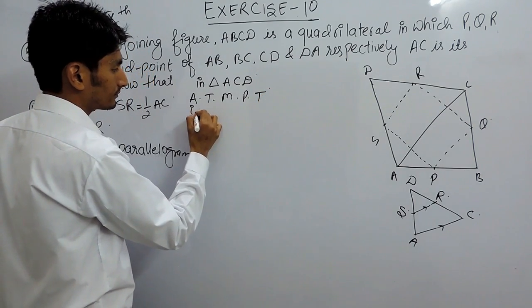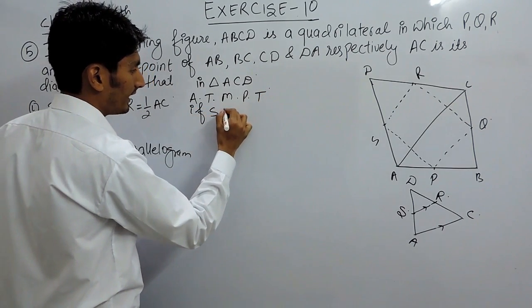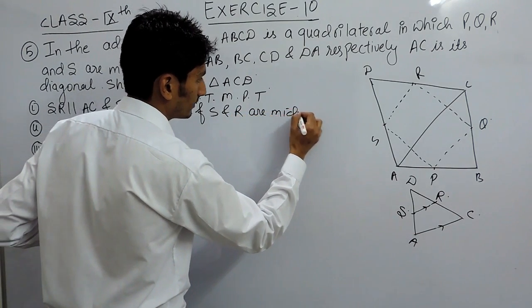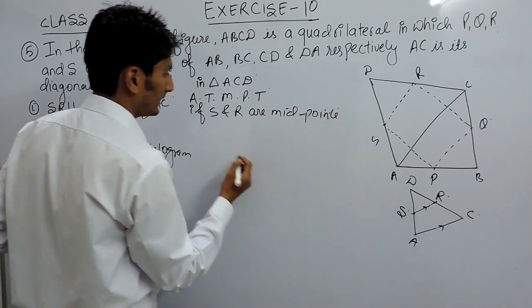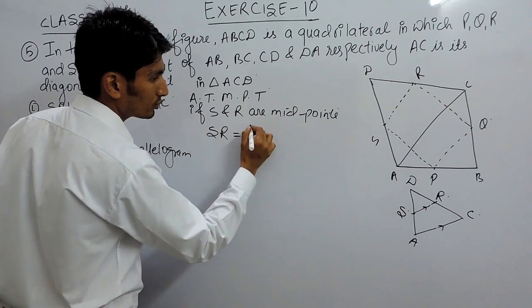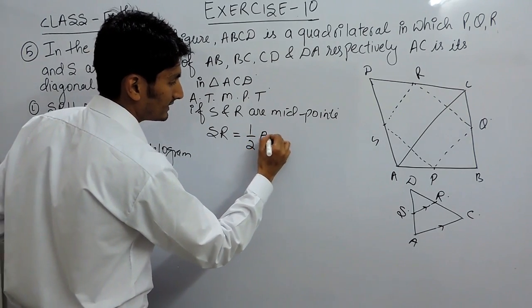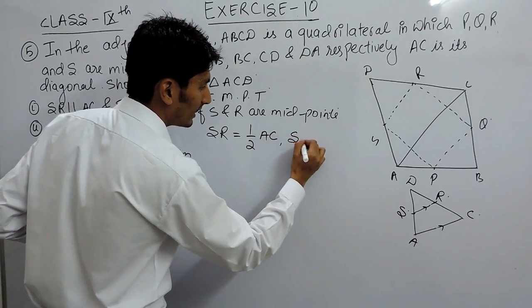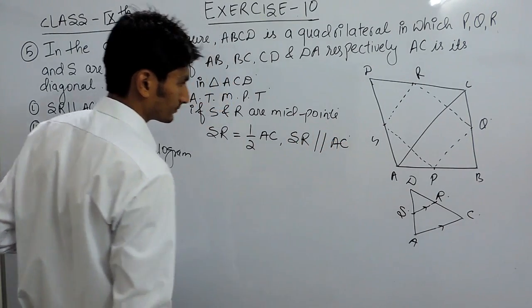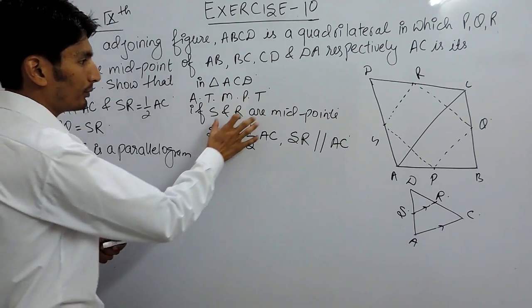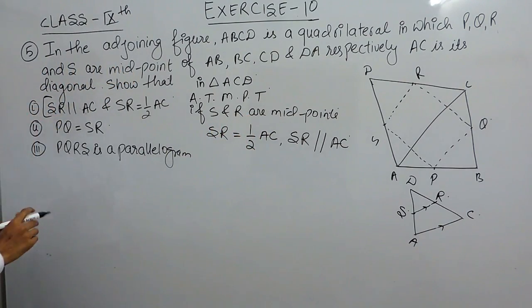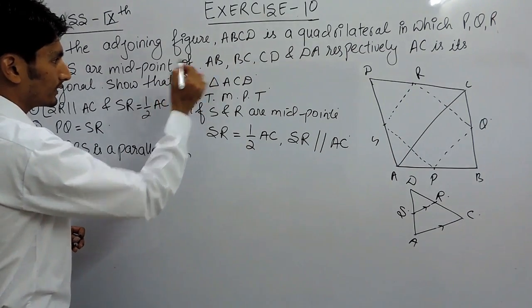Since S and R are the midpoints, by the midpoint theorem, SR must be equal to half of AC and SR must be parallel to AC. So the first part is proved.